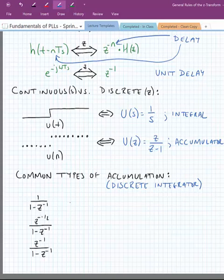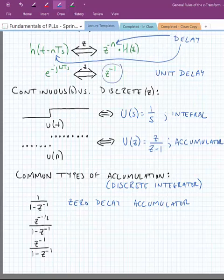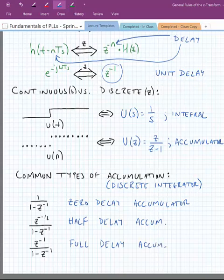Okay, so the top one here is called a zero-delay accumulator. And of course, if we add something in the numerator, z to the minus 1/2, what we're really doing is adding a half delay, as we saw up here. So this is called a half-delay accumulator. Finally, we have a full-delay accumulator. Now note that what's causing the delay is the z raised to some power in the numerator, and that is tantamount to what we would call a discrete derivative.